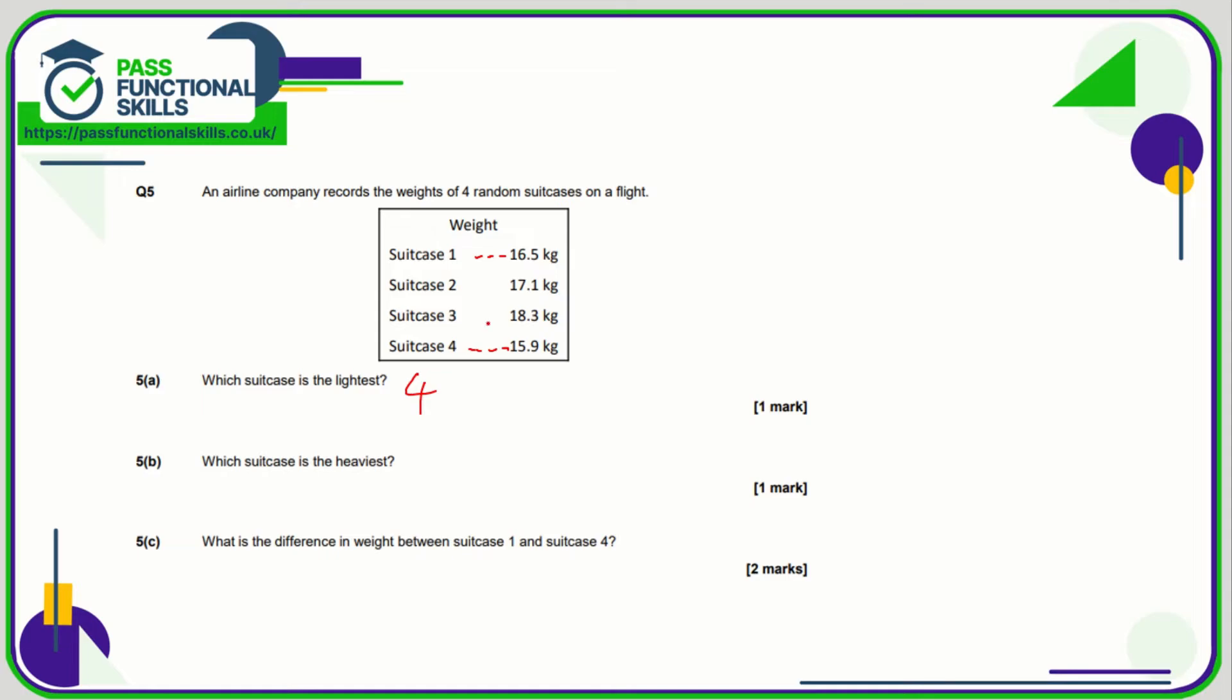The heaviest? Does anything beat 18.3? No, so that is suitcase 3. And the difference between 1 and 4 is just 16.5 minus 15.9, and that is a difference of 0.6 kilos. If you want, you could say 600 grams.